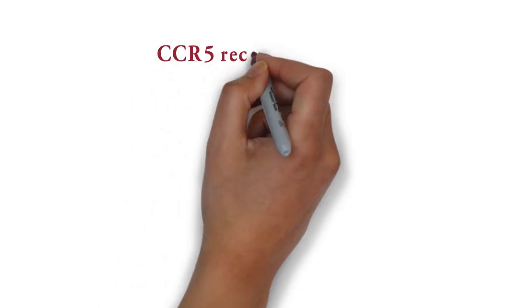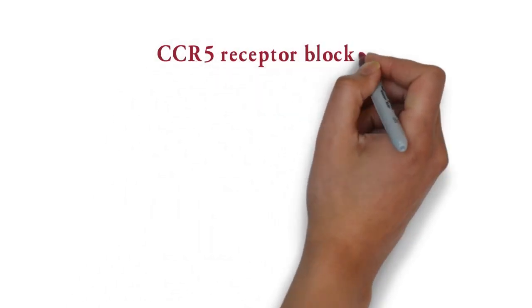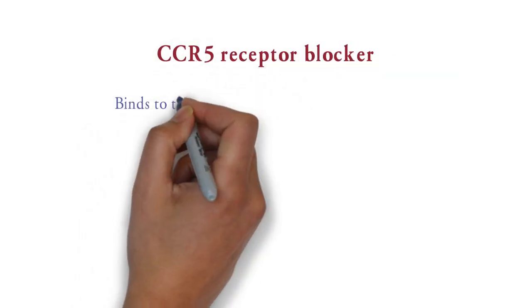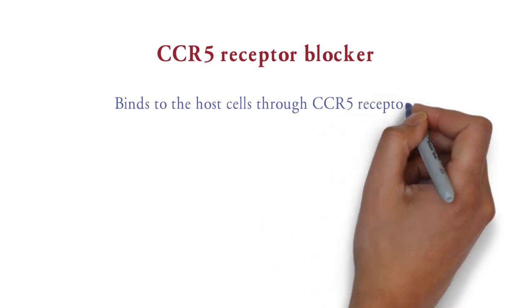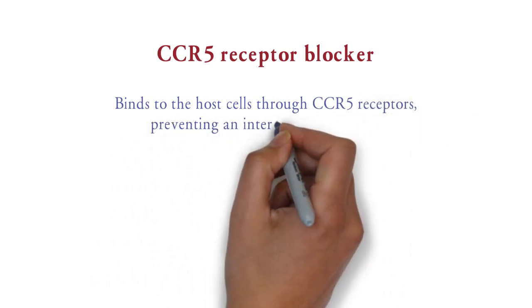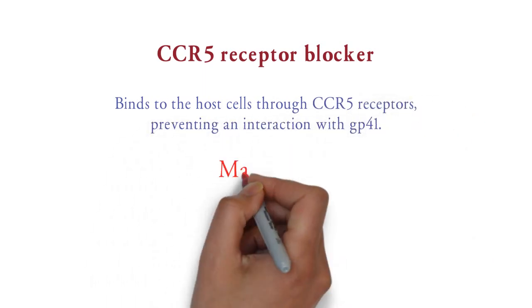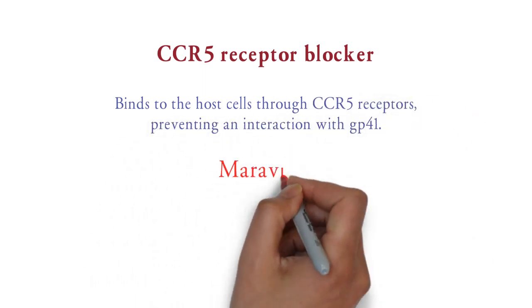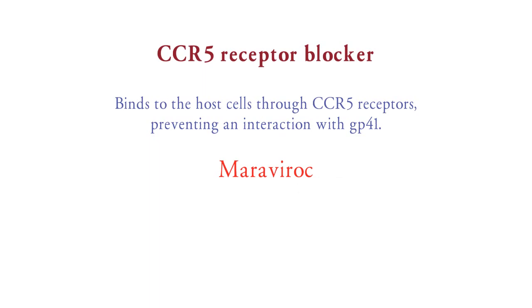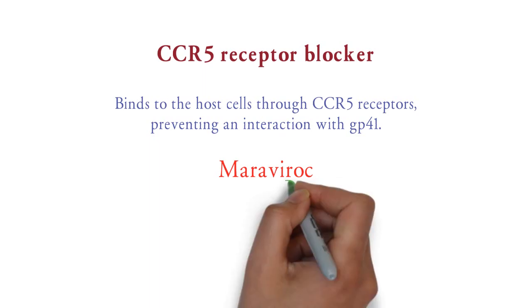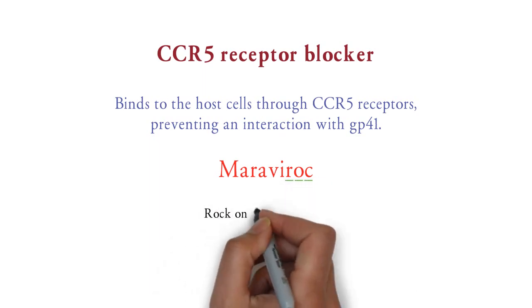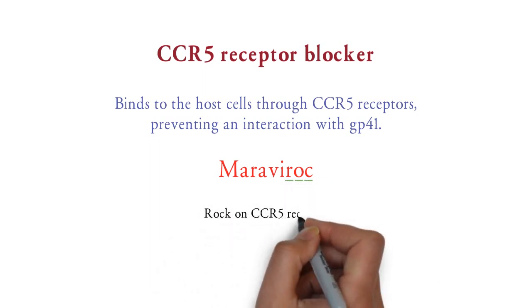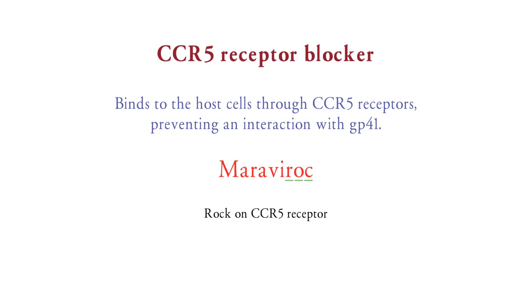Next is the CCR5 receptor blocker. This drug binds to host cells through CCR5 receptors, preventing interaction with GP41. The drug name is maraviroc. This drug contains 'roc' in its name, so you can remember it as 'rock on CCR5 receptor', i.e. maraviroc.